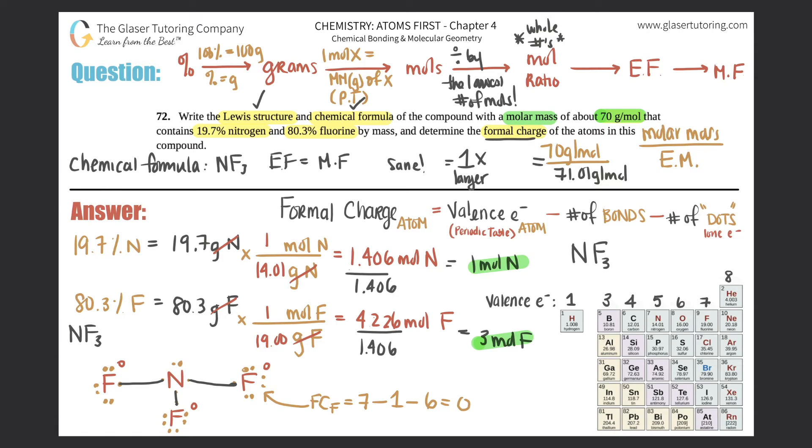Now we just have to find the formal charge for this nitrogen. So formal charge for nitrogen: start with your valence, nitrogen has five valence electrons, so five minus it has three bonds, so minus three, minus there were two dots, 1, 2. Five minus three minus two is zero, so this nitrogen is also neutral. So every atom in NF3 is neutral.